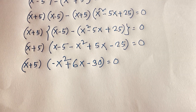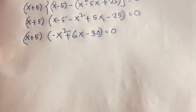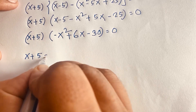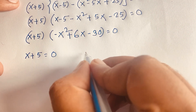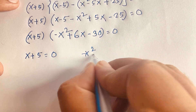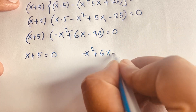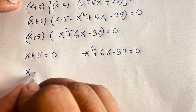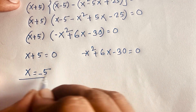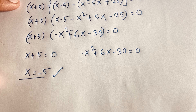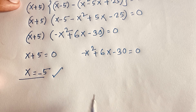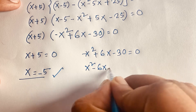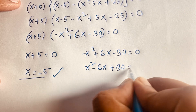We will find out two cases. Our first case is x plus 5 equals 0, which gives x equals minus 5. This is our first answer. For the second case, we have minus x squared plus 6x minus 30 equals 0, which becomes x squared minus 6x plus 30 equals 0.